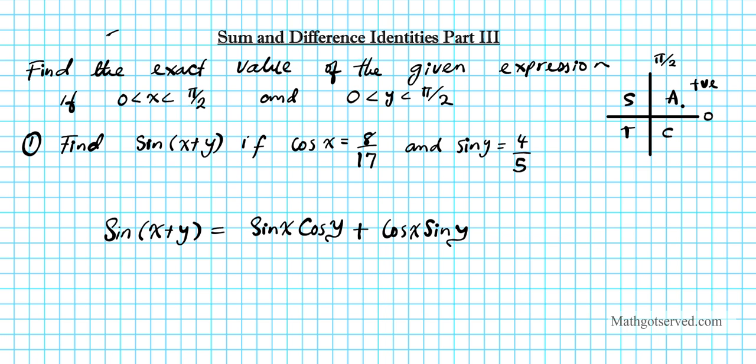If you look at what we're given, we're given two ingredients but we have four ingredients that are needed to create sin(x+y). We have cos x and we have sin y, but we need, in order for us to evaluate this expression, we need sin x and we need cos y.